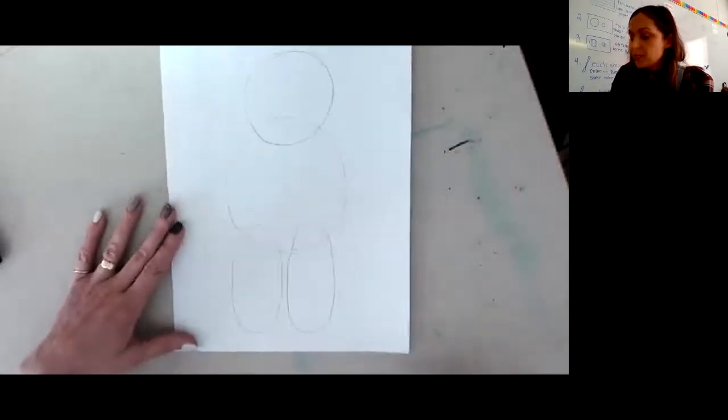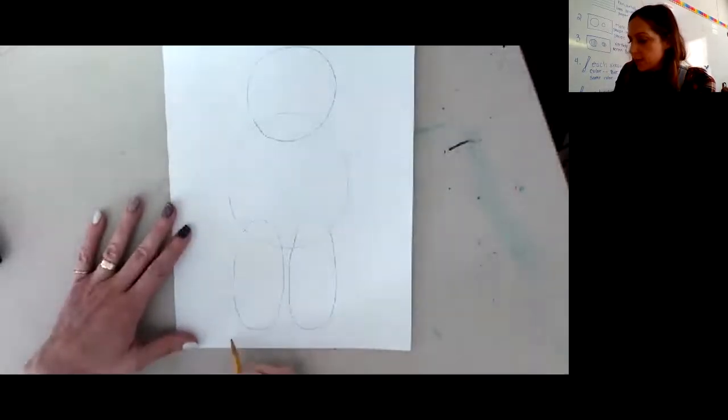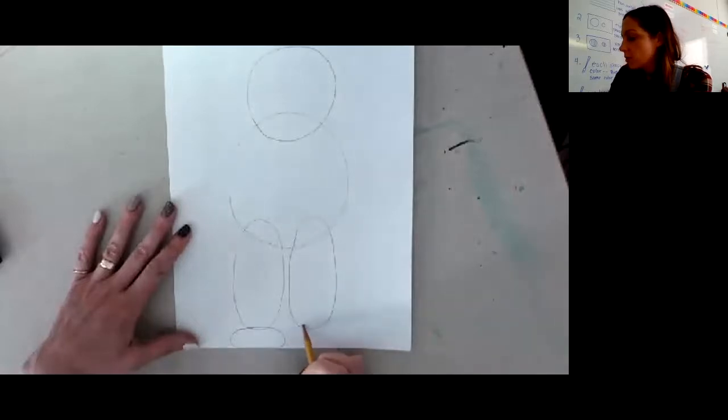For my bear's feet, since we're down here anyway, I'm going to make an oval that's more on the side and then kind of overlapping the length a little bit. It's kind of a squishy oval. Here we go.